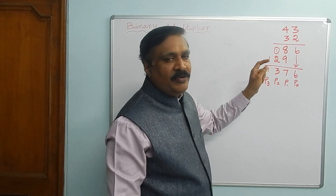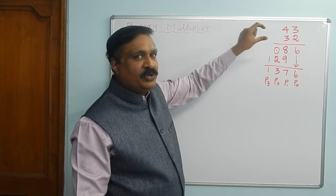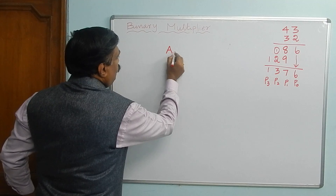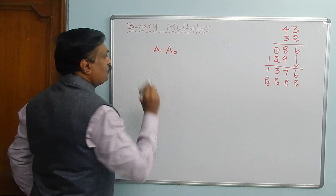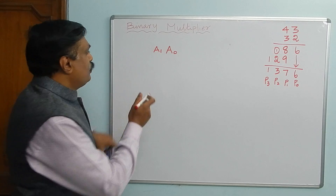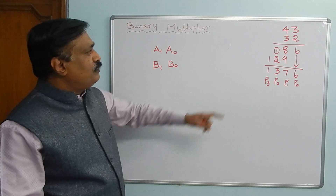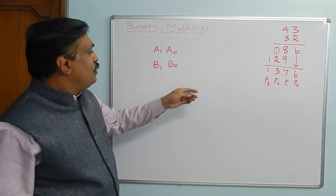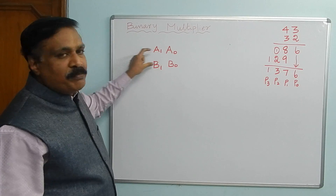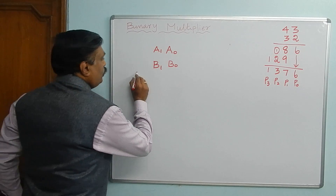Instead of a particular number, we have to design a circuit for a general purpose. So I take the first number as A0 and A1, where A0 is 0 or 1 and A1 is 0 or 1. The second number is B1, B0. Instead of taking a particular decimal or binary number, we design for general purpose so you can give the values afterwards.